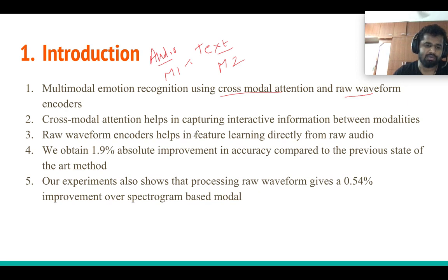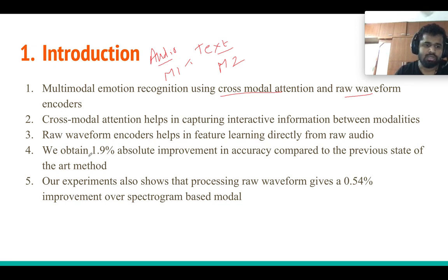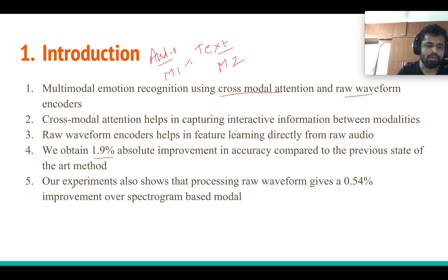We use raw waveform-based encoders, which help us learn feature representations directly from raw audio instead of using MFCC or spectrogram-based features. We show that using cross-modal attention with raw waveform encoders gives us a 1.9% absolute improvement in accuracy compared to previous state-of-the-art multimodal emotion recognition models.